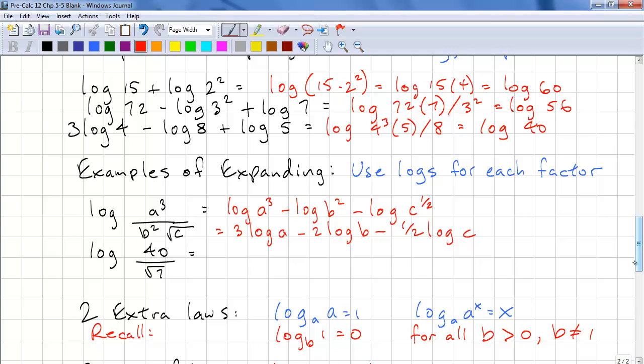Next example. We have log of 40 divided by root 7. If you're given a composite number, you need to do the prime factorization. A composite number is simply not a prime number. So 40 is 8 times 5. And 8 is 2 to the power of 3. And we have 7 to the power of 1 half. And this is all in brackets. We can simplify this to 3 log 2 plus log 5 minus 1 half log 7.